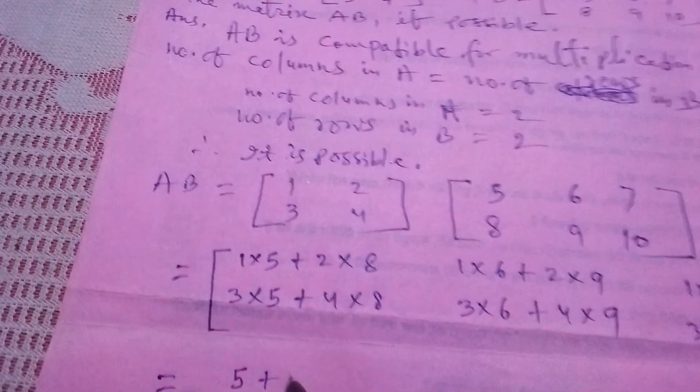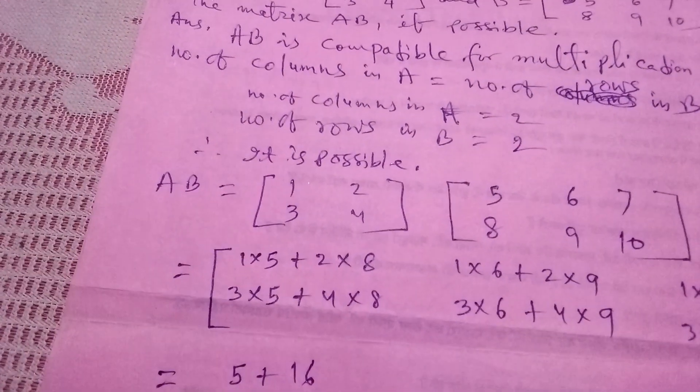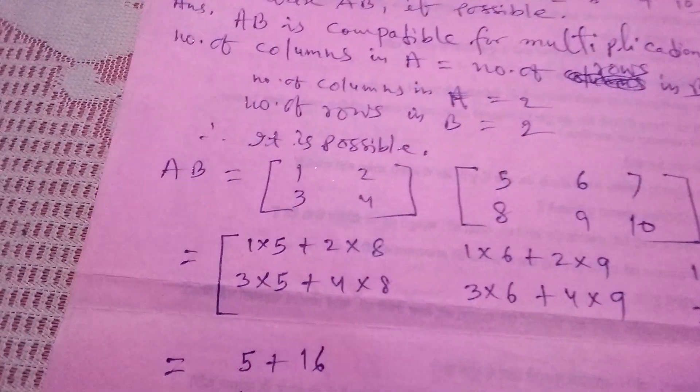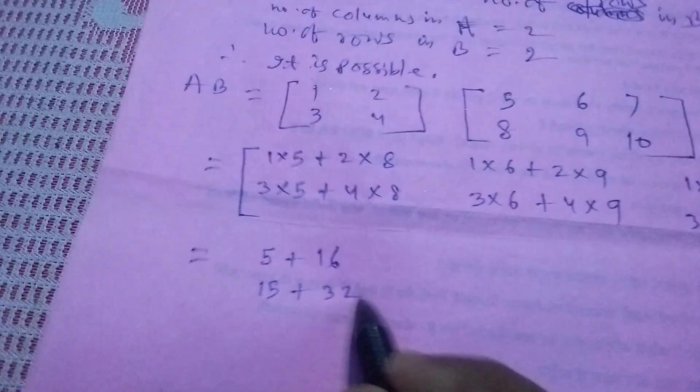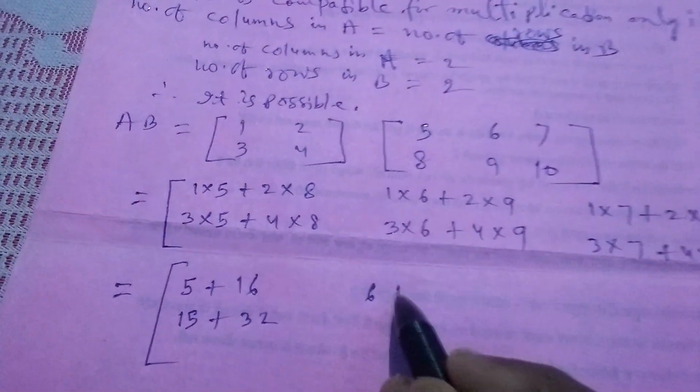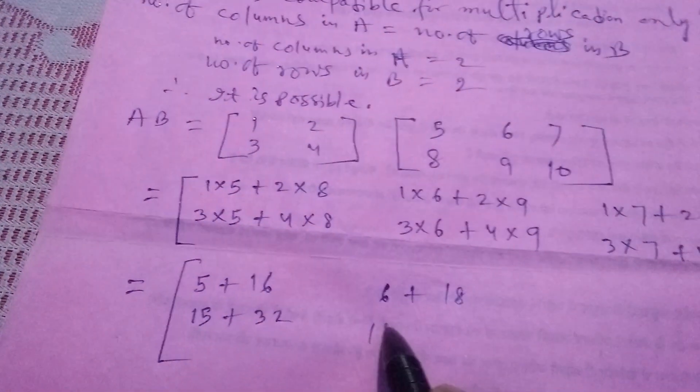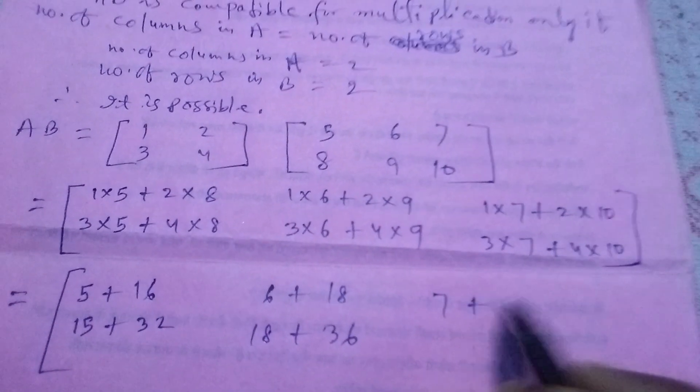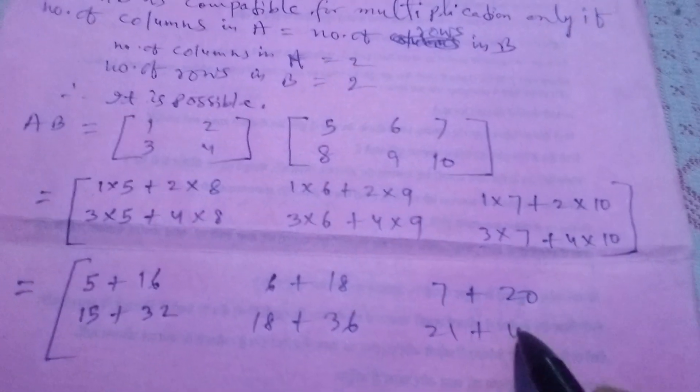1 into 5 is 5 plus 2 into 8 is 16. 3 into 5 is 15, plus 4 into 8 is 32. 6 plus 18, 18 plus 36, 7 plus 20, and 21 plus 40.